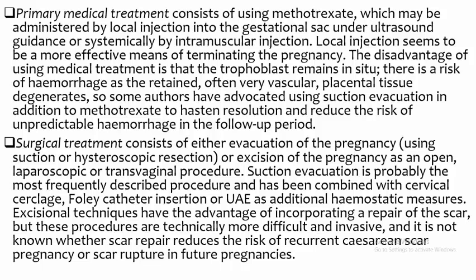Primary medical treatment consists of using methotrexate, which may be administered by local injection into the gestational sac under ultrasound guidance or systemically by intramuscular injection. Local injections seem to be a more effective means of terminating the pregnancy. The disadvantage of medical treatment is that the trophoblast remains in situ; there is a risk of hemorrhage as the retained, very vascular placental tissue degenerates, so many authors have advocated using suction evacuation in addition to methotrexate to hasten resolution and reduce the risk of unpredictable hemorrhage.